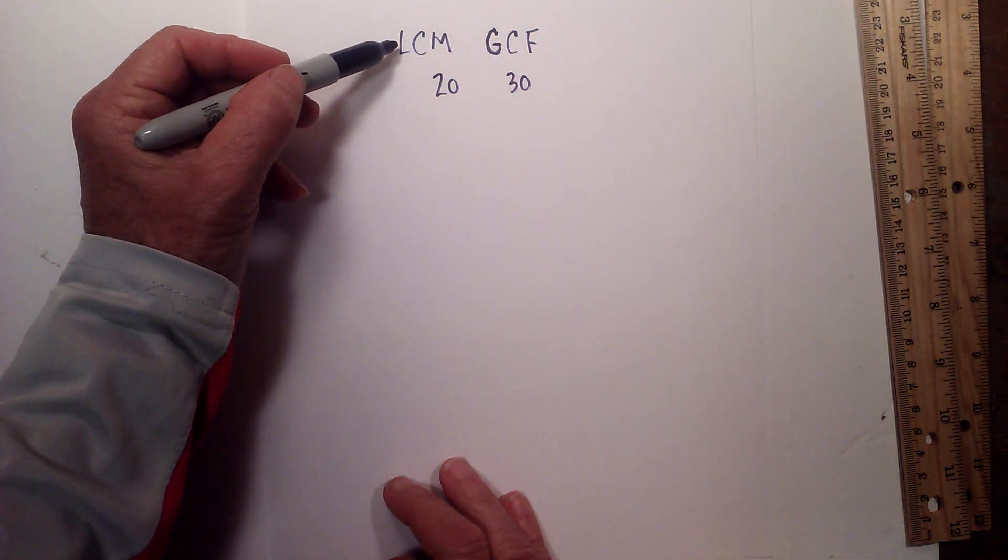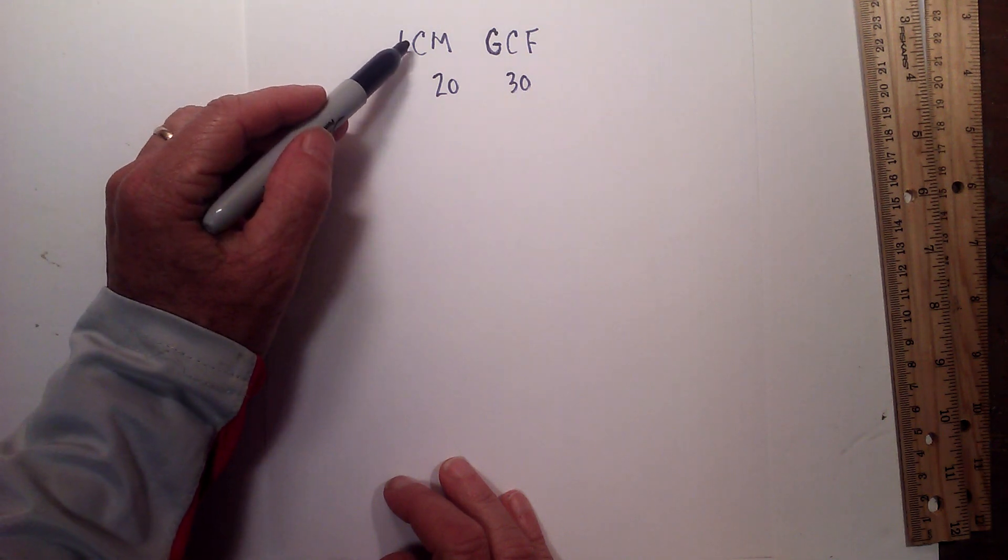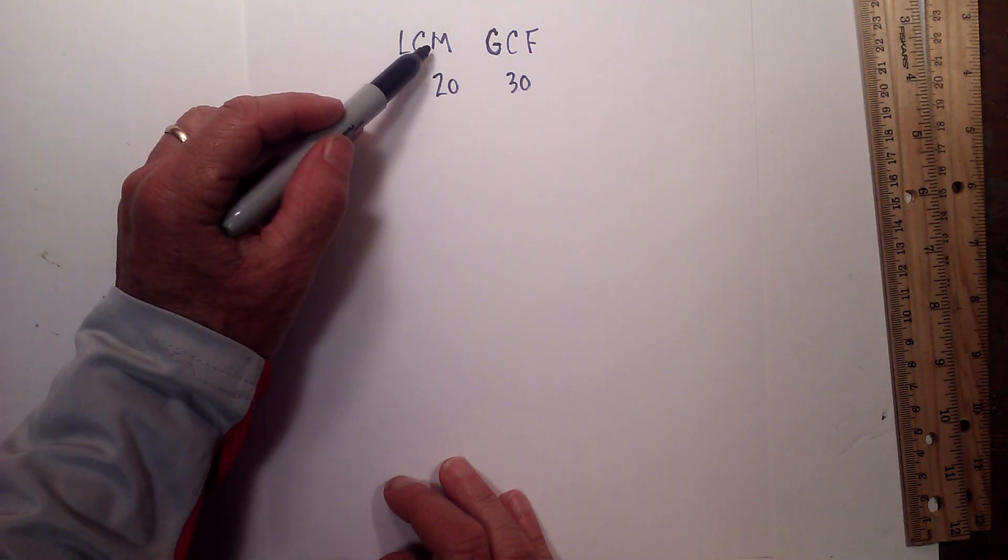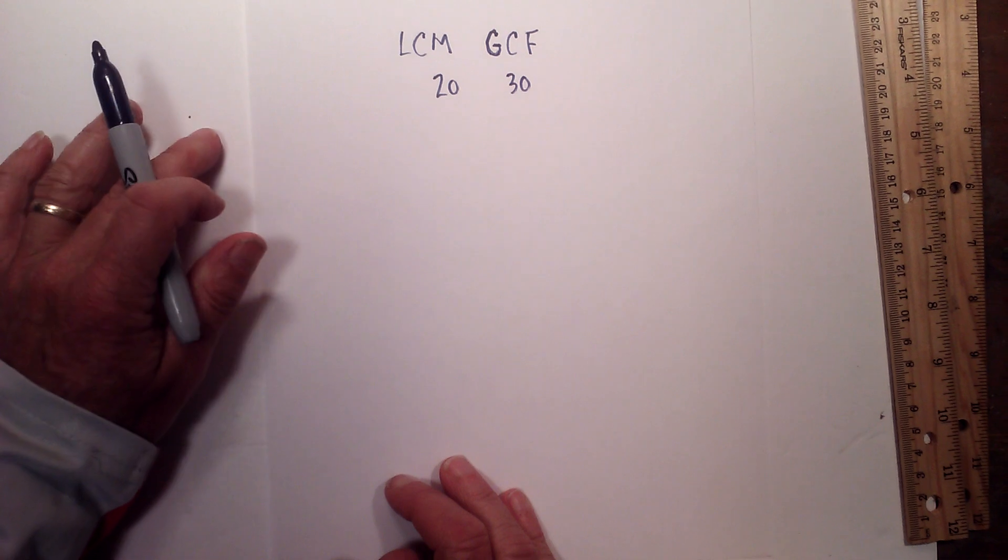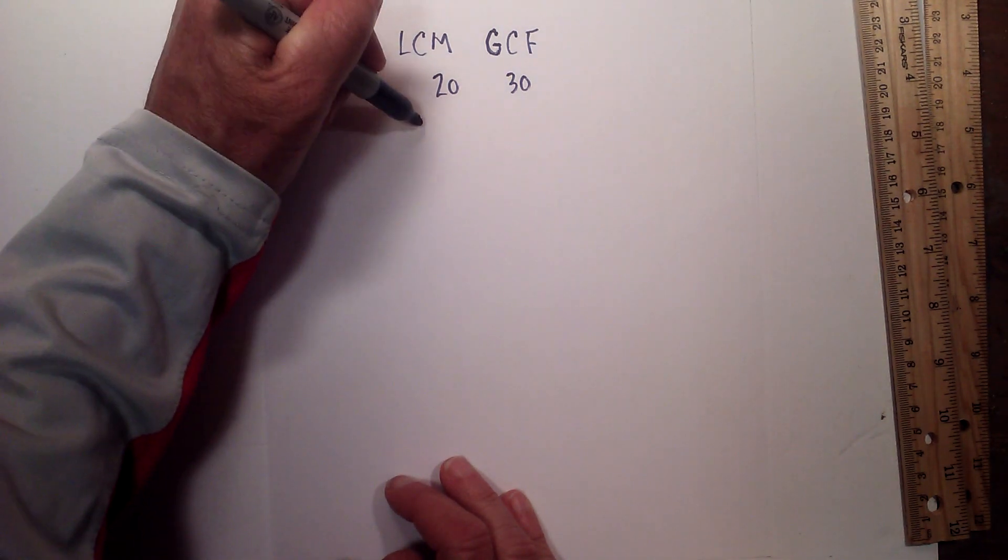In this video I'd like to find the LCM and the GCF of 20 and 30. The lowest or least common multiple or the greatest common factor of 20 and 30. So I like to use a factor tree, so let's get started.